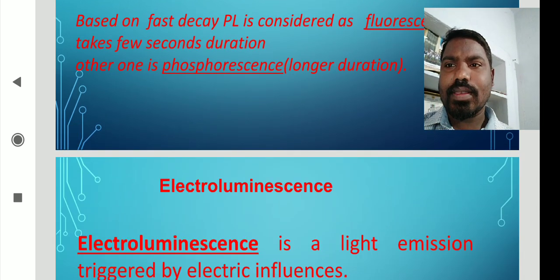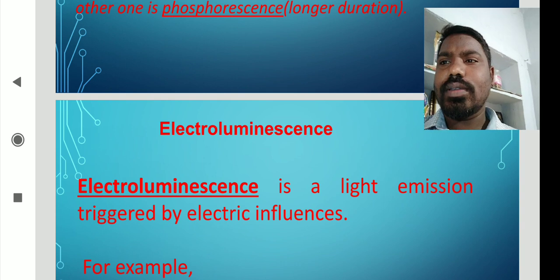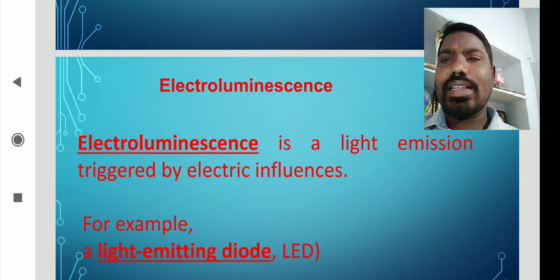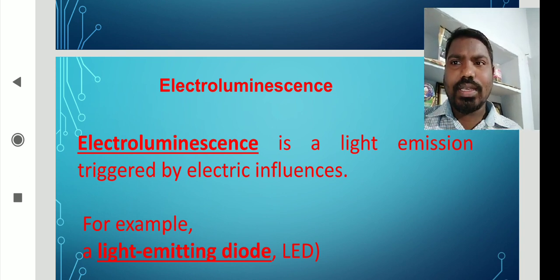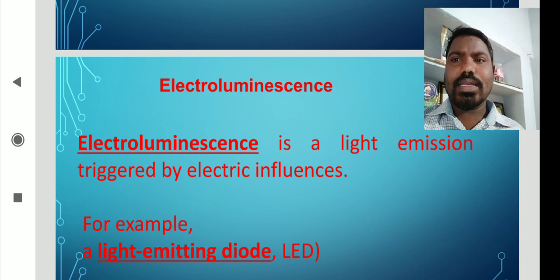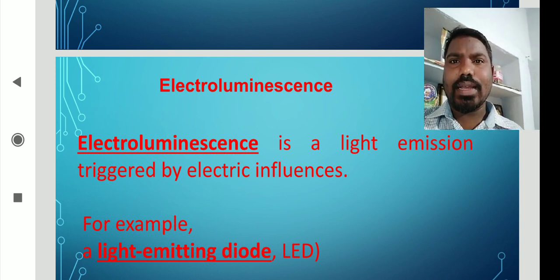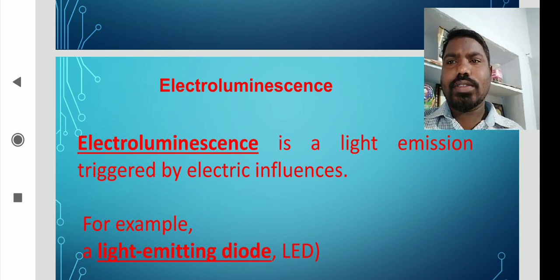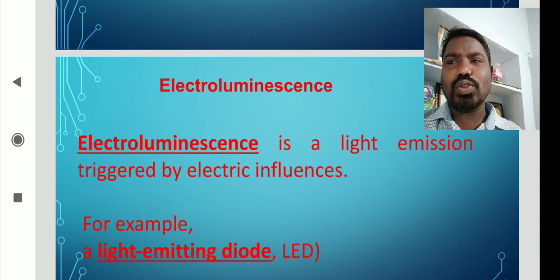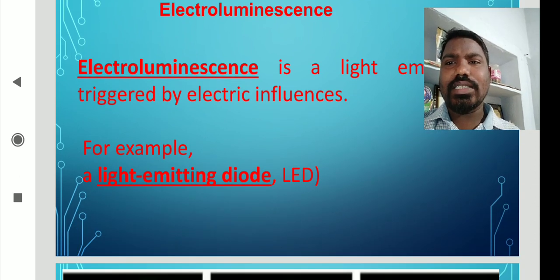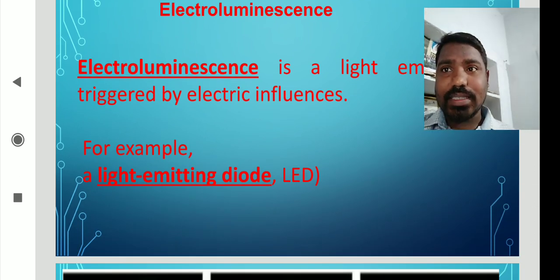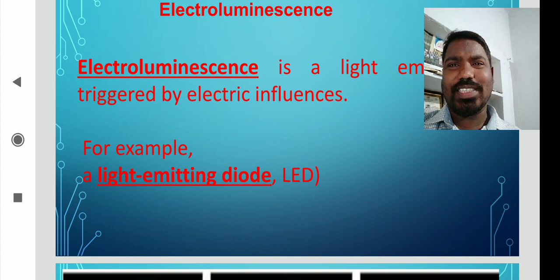Next, electroluminescence. Electroluminescence is light emission triggered by electrical influences. Based on the electrical medium, this type of luminescence exists. For example, a light-emitting diode — in a light-emitting diode, we can observe the phenomenon of electroluminescence.